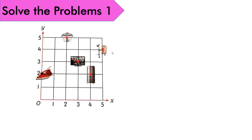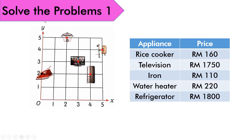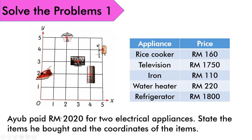Now we go to solve problem 1, which is about coordinates. We have 5 appliances: rice cooker, television, iron, water heater, and refrigerator — each with a price. The question: Ayub paid RM2,020 for two electrical appliances. State the items he bought and the coordinates of the items. Ayub membayar RM2,020 untuk dua perkakas elektrik. When solving problems, remember the four steps: U — Understand, P — Plan, S — Solve, and C — Check.